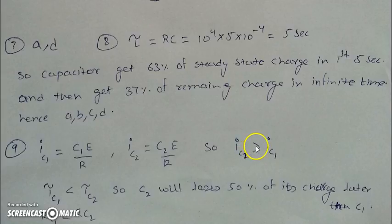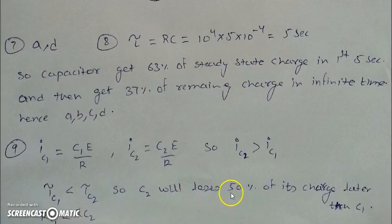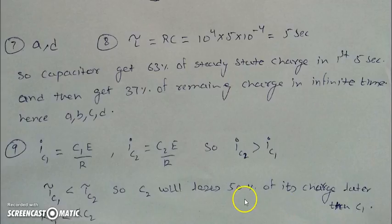The time constant τ_C2 = RC₂ is greater than τ_C1 = RC₁ since C₂ > C₁. Therefore capacitor C₁ loses its charge faster compared to C₂, because the time constant of C₁ is less than that of C₂.